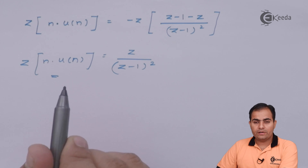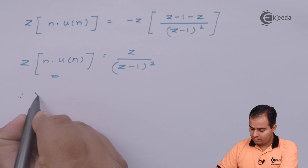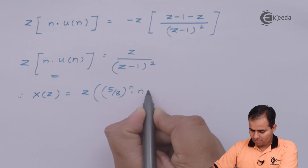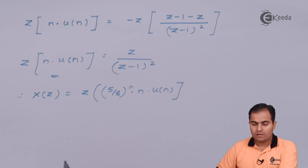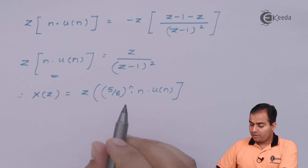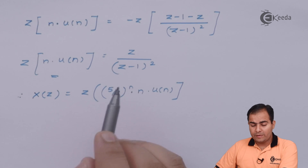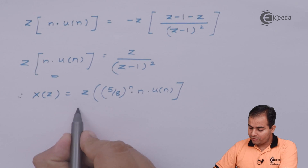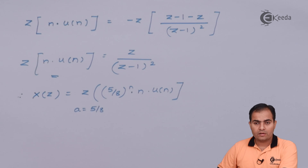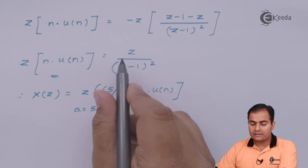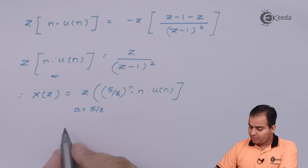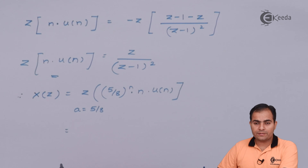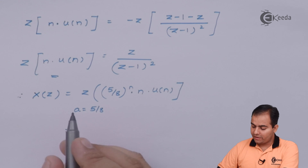Now we apply the time scaling property. By the time scaling property, all z in the expression are replaced by z/a. Here the value of a is 5/8. So both z terms are replaced by z/a. We first treat 5/8 as a general value 'a' and substitute a = 5/8 afterward.